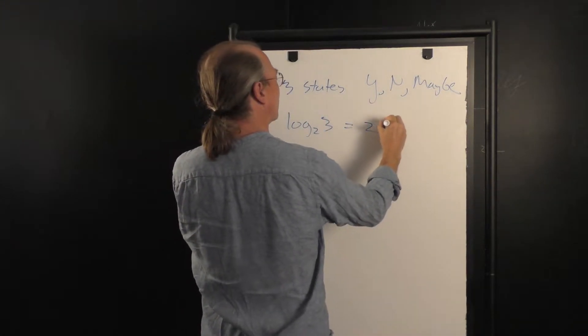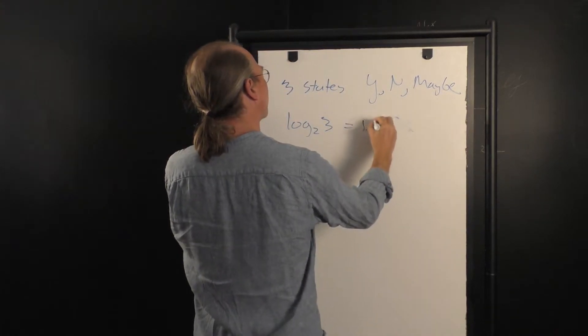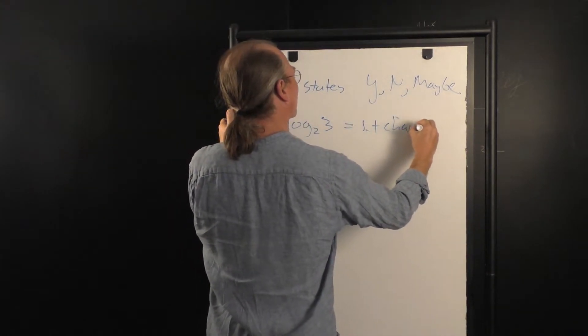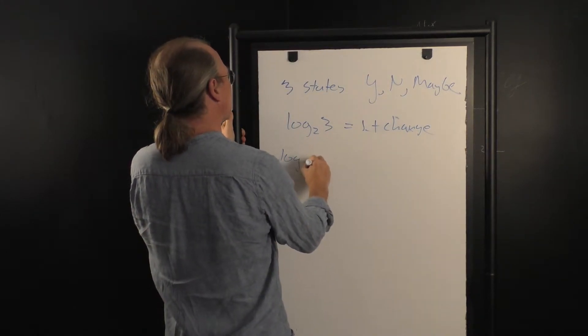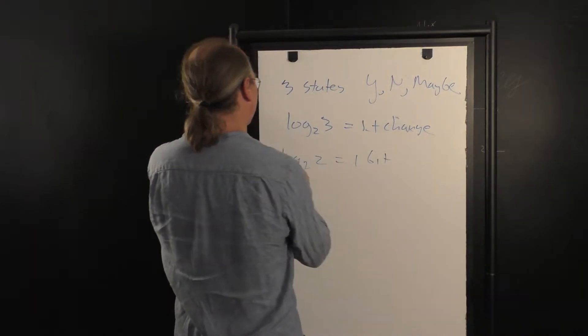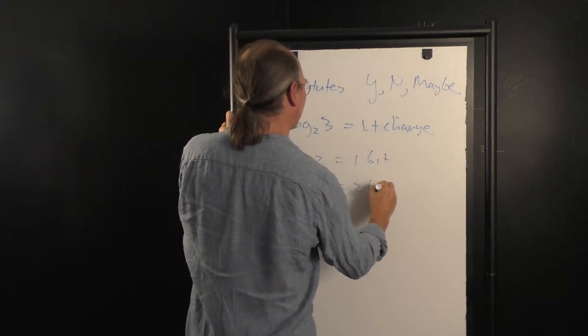which is equal to 1 plus change bits. It's in between log to the base 2 of 2, which is equal to 1 bit, and log to the base 2 of 4, which is equal to 2 bits.